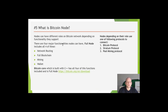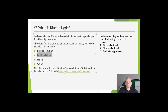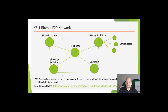There are four major functionalities a node can have. A full node is a key term — it includes all four functionalities. The first functionality is network routing, which every node includes. The second is blockchain: not all nodes include the full blockchain, because for example a mobile wallet wouldn't, as full blockchain takes a lot of memory. Full blockchain can be included in nodes like blockchain.info.